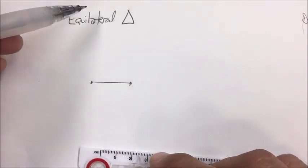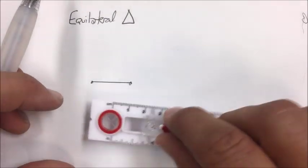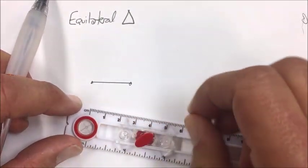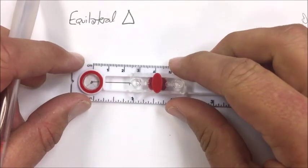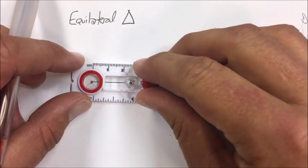In order to construct an equilateral triangle, we're going to start with a segment. Then we'll fix this distance on the compass to the length of that segment.